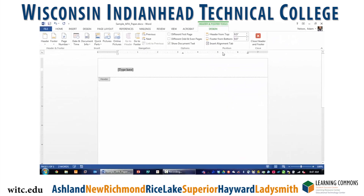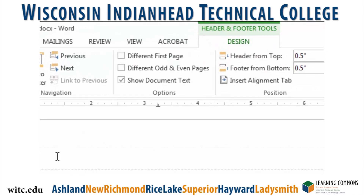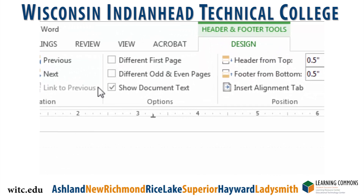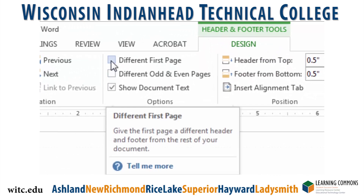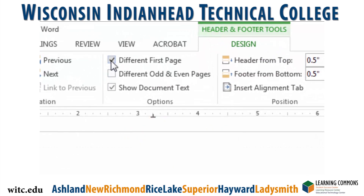Word will automatically open up the Header field and put your cursor in the top left corner. Before you start typing, there is one more thing you need to check first. Go back to your ribbon and put a check mark in the box: Different First Page.